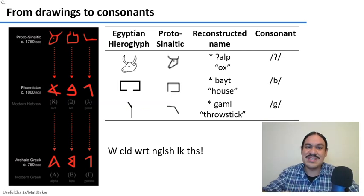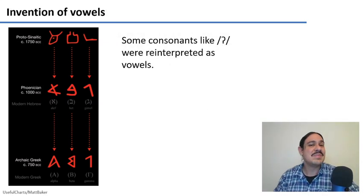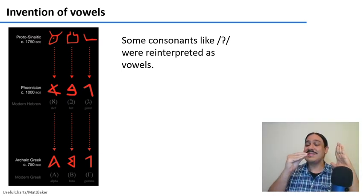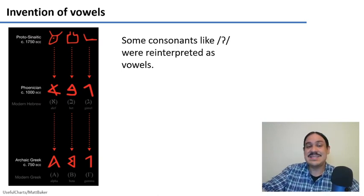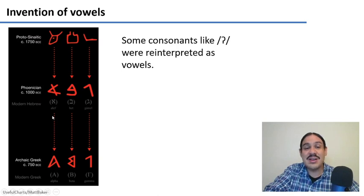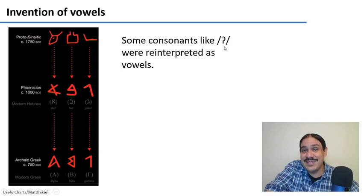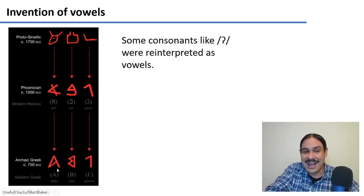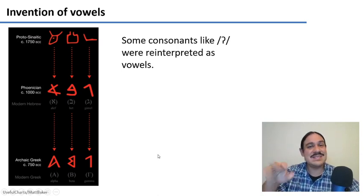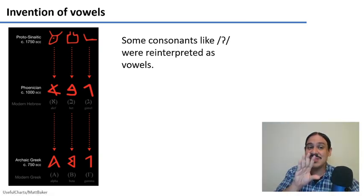Pictograms, rebus, consonants — now we need to invent vowels. This may have happened by accident: some sounds like the glottal stop did not exist in languages like Greek, so the Greeks couldn't even hear the glottal stop at the beginning of 'alp.' But they could hear the 'ah,' which was the first vowel, so they reinterpreted the symbol not as the glottal stop but as the vowel 'ah' — and thereby invented vowels for Ancient Greek. The rest is modification of characters down to our days, giving us systems with both consonants and vowels.